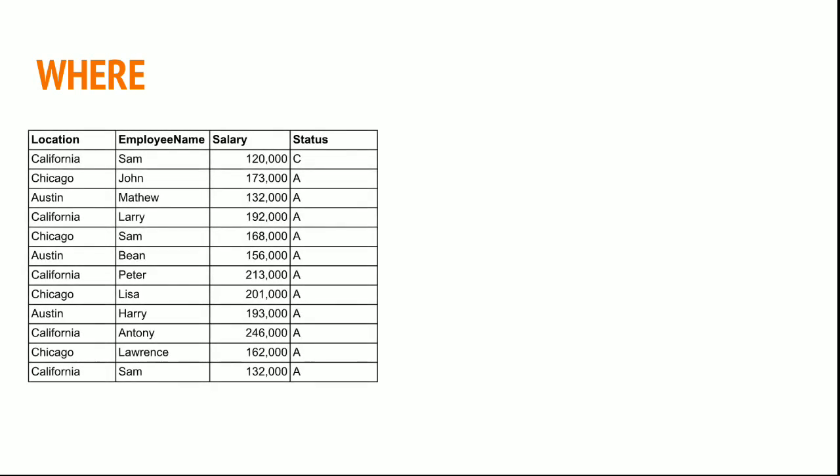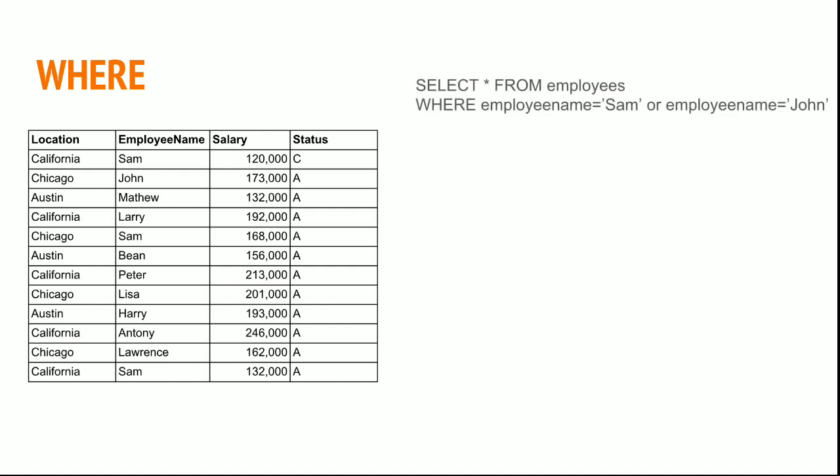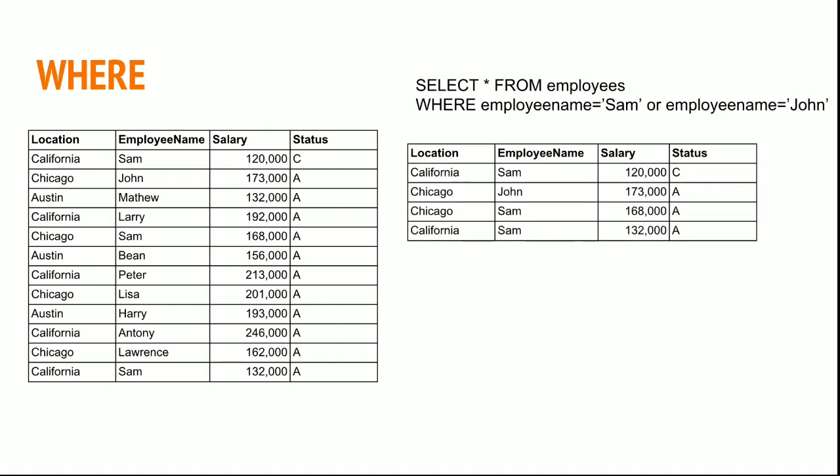Now if I want to select data where the employee is Sam or the employee is John, you can type the following statement to fetch the records for Sam or John. Employee Sam is in California and Chicago, whereas John is only in Chicago. The California Sam records are duplicated because he has two entries with record status C and A.